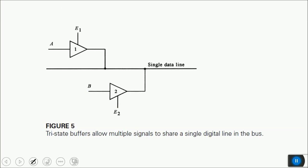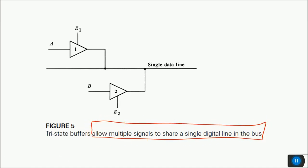Tri-state buffers are another important component used in digital signal conditioning. Their major advantage is that they allow multiple signals to share a single digital line on the bus. They have a high-impedance output state when open, so only one can be active at a time — extensively used in memory system design.